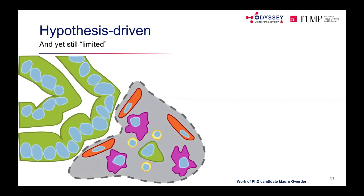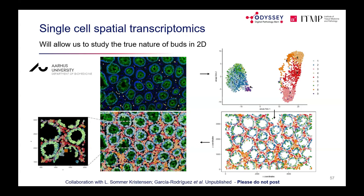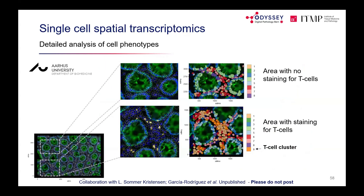Beyond targeted multiplex approaches, spatial transcriptomic profiling enables examination of 18,000 genes in small spots across the tumour, enabling discovery of new genes and biology. Single-cell spatial approaches allow examination of 1,000 or more genes per individual cell on tissue slides.